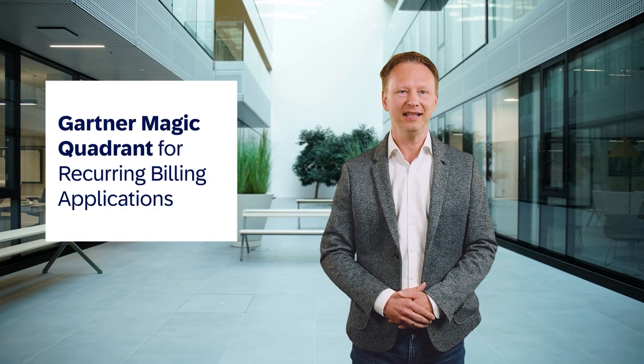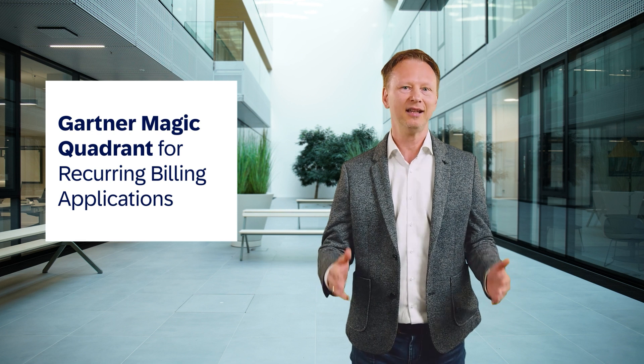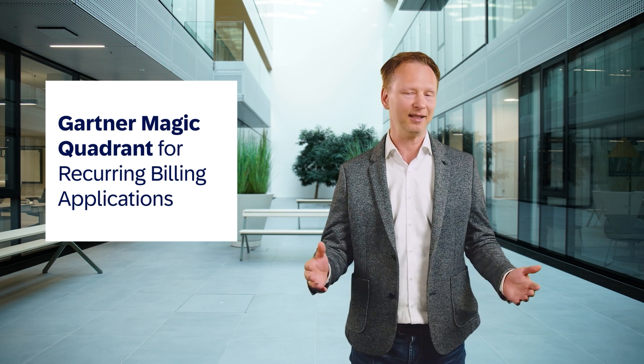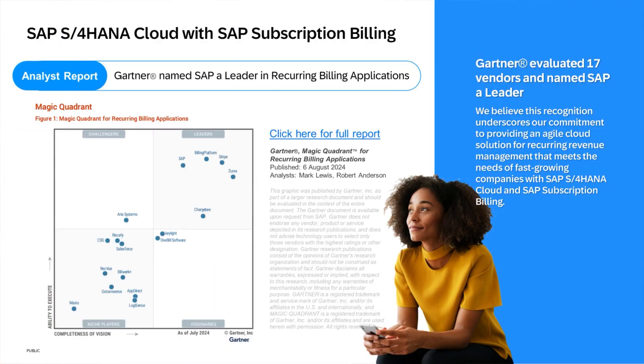Before we get to the features, we have some exciting news to share. Gartner has recently named SAP a leader in its inaugural 2024 Magic Quadrant for recurring billing applications, published on August 7th. We believe this recognition underscores our commitment to providing an agile cloud solution for recurring revenue management that meets the needs of fast-growing companies with SAP S/4HANA Cloud and SAP Subscription Billing. Our cloud solution portfolio enables customers to run subscription and consumption-based business models with quick time to value. Whether you want to add new revenue streams or scale your digital business, SAP as a leader for recurring billing applications has the right solution for you.